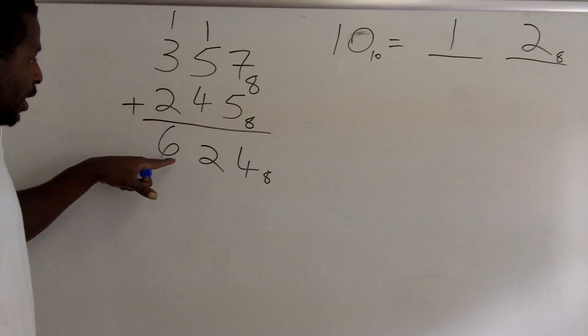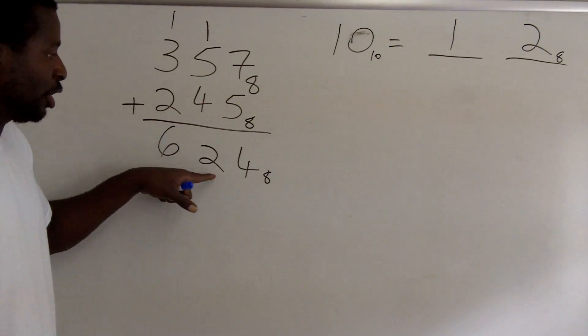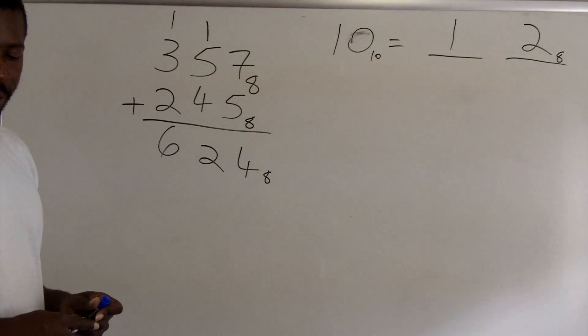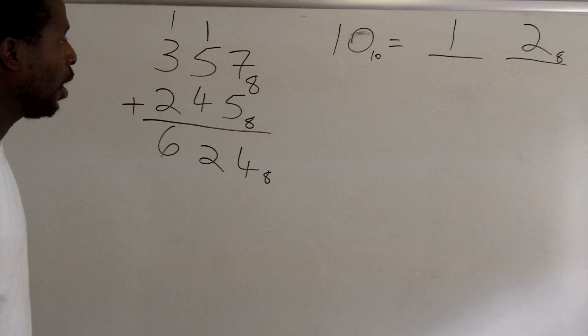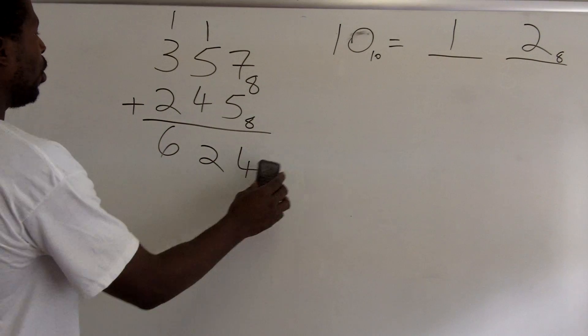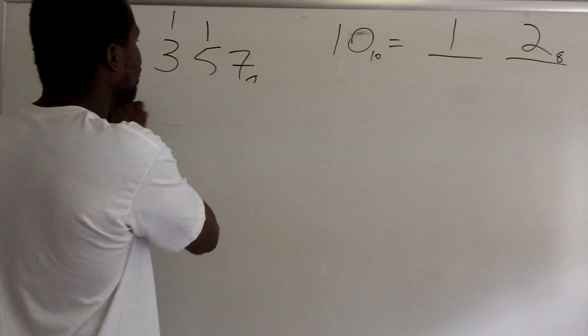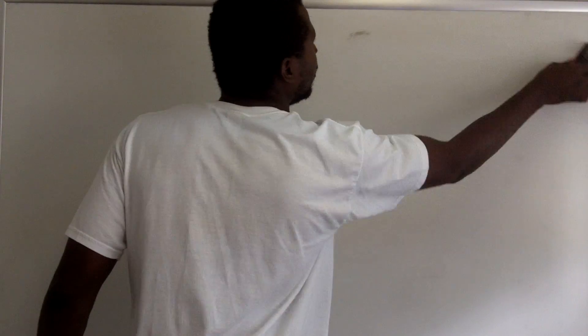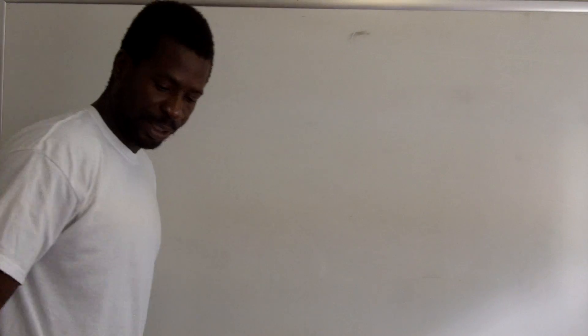Now I have 3 plus 2 is 5, plus 1 that's 6. Since 6 is smaller than 8, I don't have to do any conversion. So this addition gives me 624 base 8.